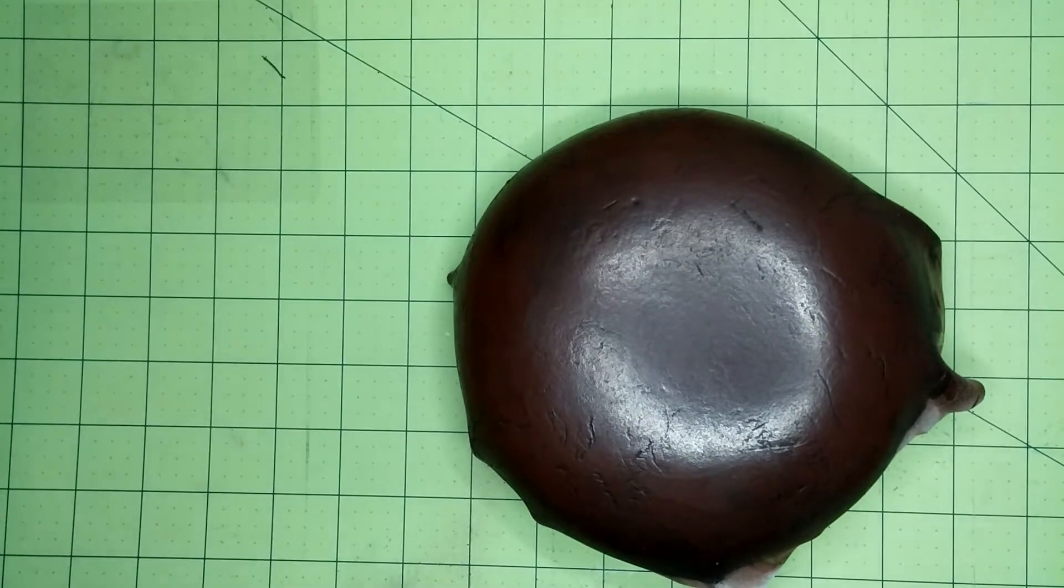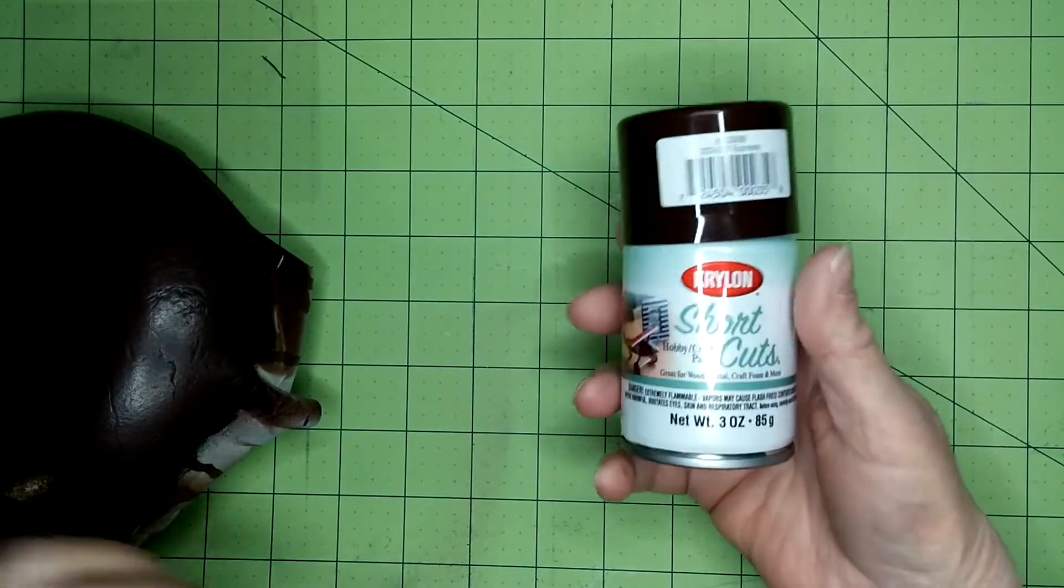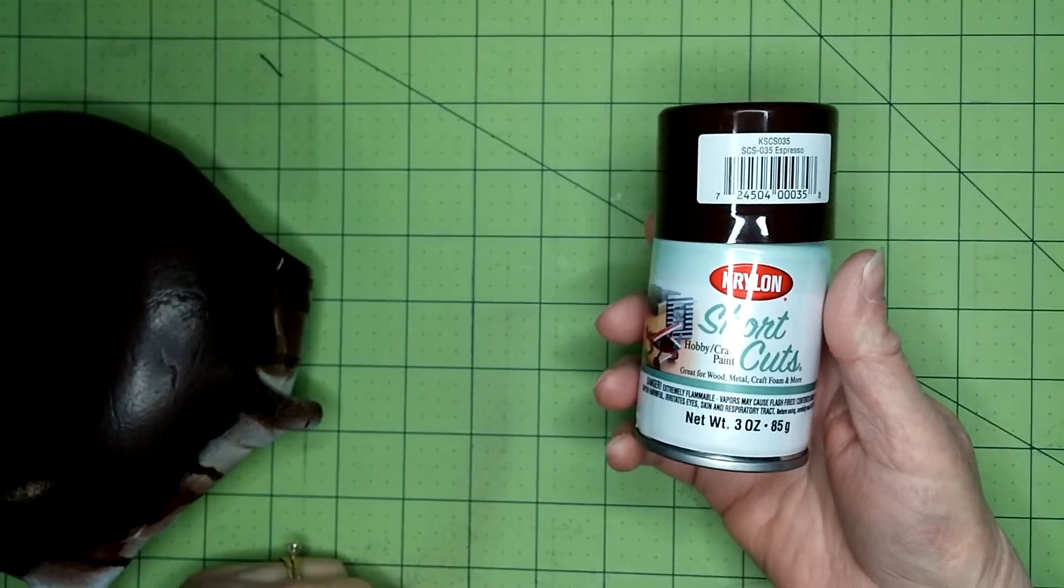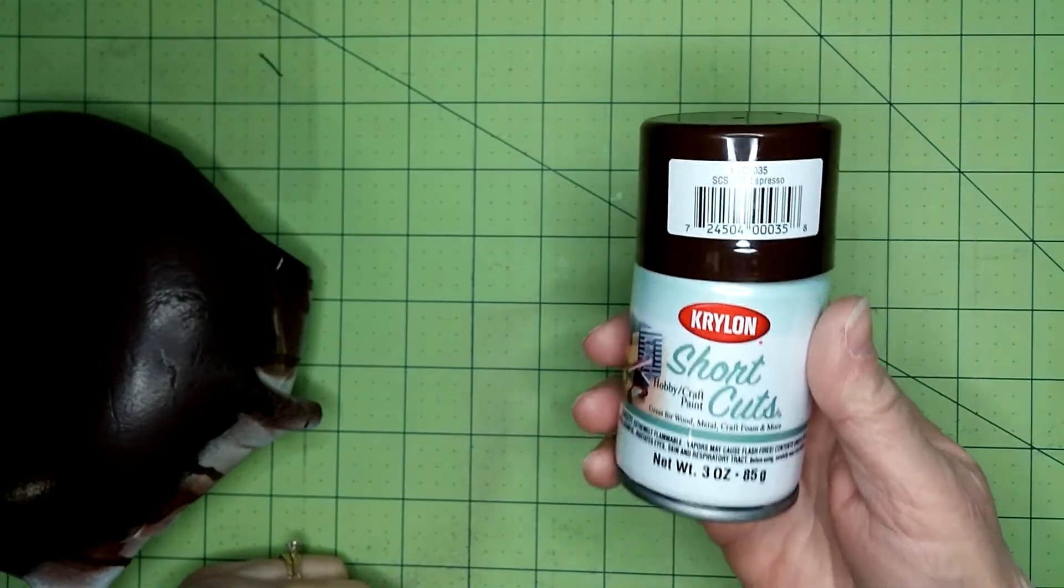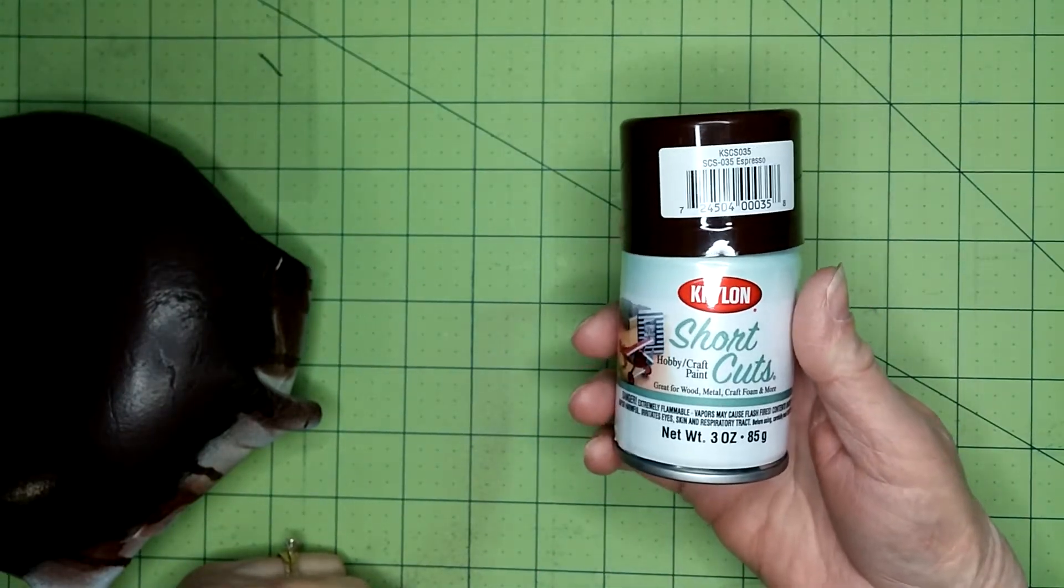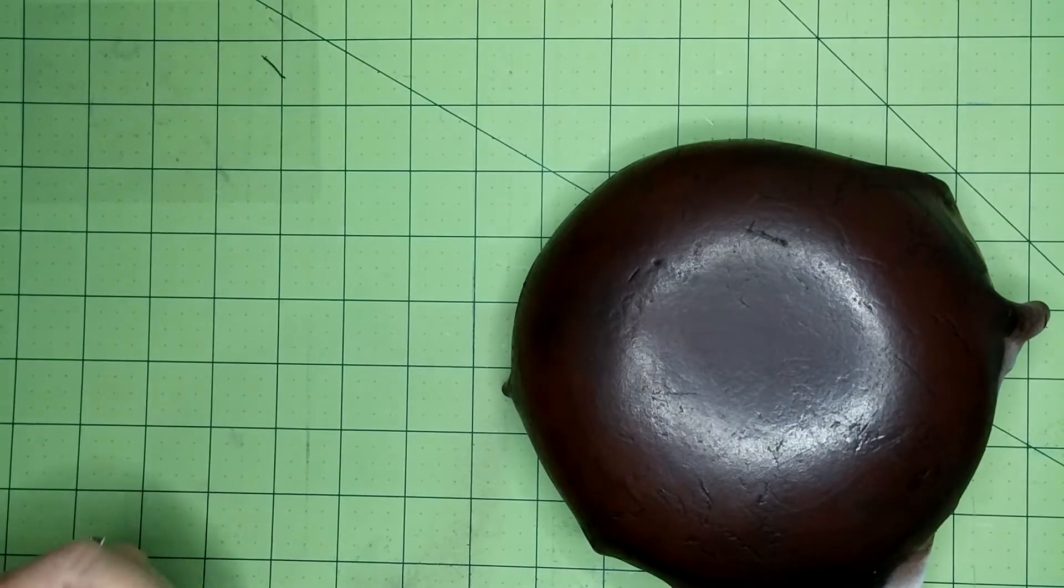The next thing to do was cover with a couple of coats of this espresso brown paint from Krylon. Once I'd done a couple of coats of that, it was time for the distressing look.